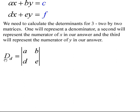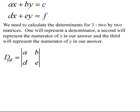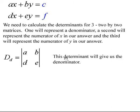To find the determinant of the denominator, we need a two-by-two matrix. That matrix is found by taking the coefficients of x and y in both equations: a, b, d, e. When we find the determinant of that two-by-two matrix, it will give us the denominator of our answer.